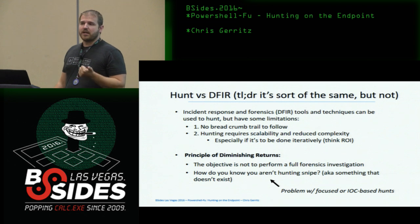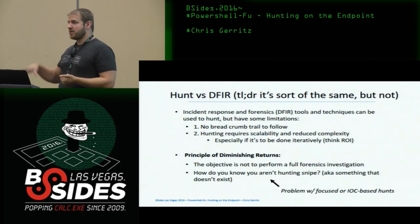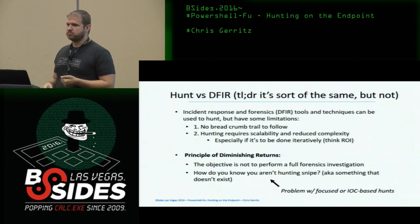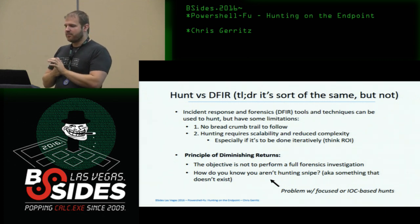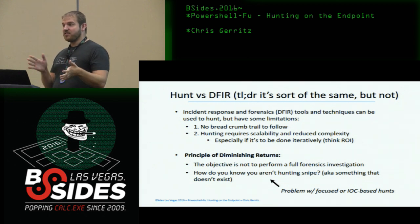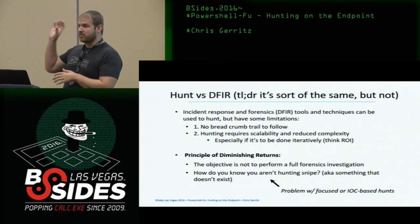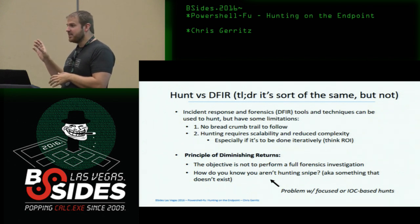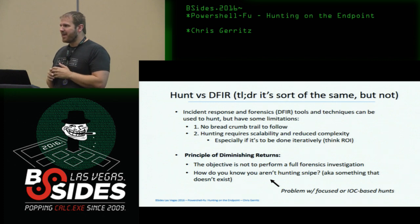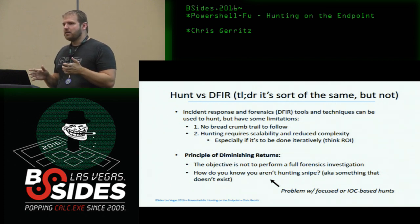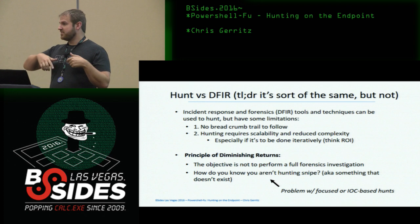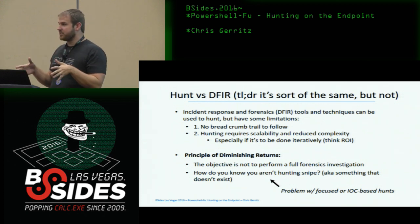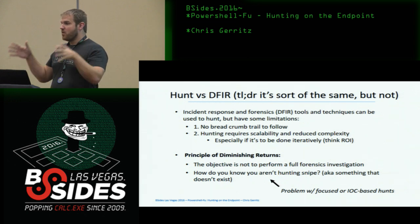There's another thing when it comes to hunting: the principle of diminishing returns. A lot of people when they get started are looking for something specific — like let's go look for signs of Mimikatz being run. But if you're just looking for one thing, you'll have a problem: did they even use that tool, or did they use a different one? I call that focused or IOC-based hunts. I don't recommend it because it's not scalable and there's no ROI. The methodology we're going to show today is basically: collect a lot of stuff from the endpoint, compare it against every data source we have, and then filter to the top through anomaly detection what's interesting to look at.